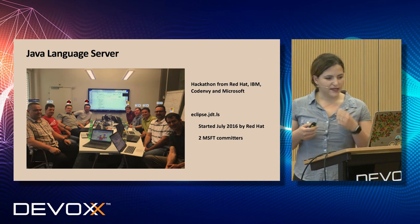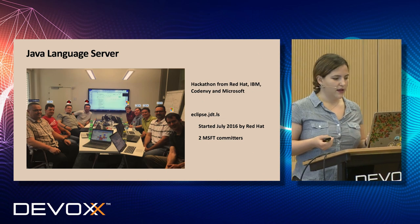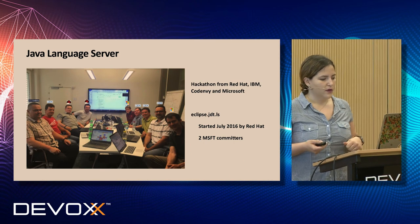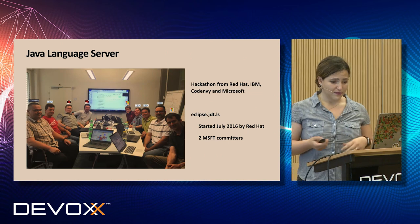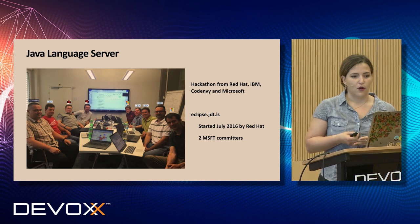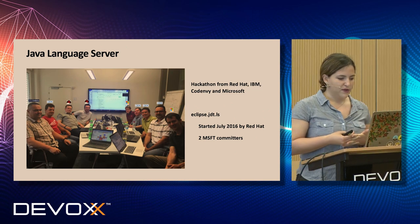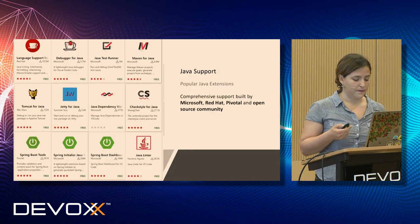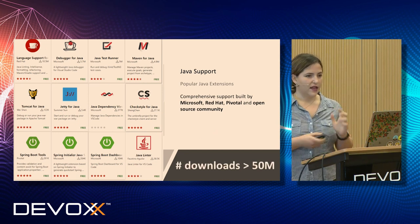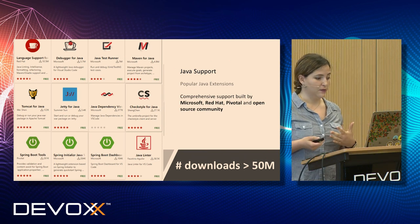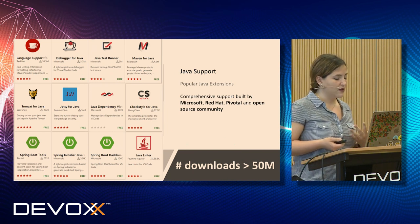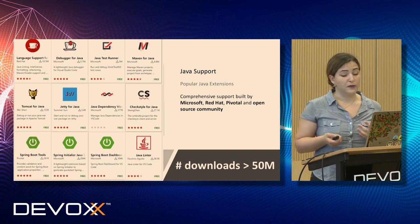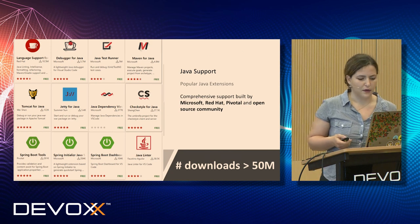In 2016, a group of people gathered and said: we have this great Language Server Protocol — why don't we have a Java language server to implement that protocol? So a group from Red Hat, IBM, Codenv, and Microsoft collaborated and created that server over a hackathon in Switzerland. It was very successful, and it's now continued to be supported by Red Hat. At the moment, we see more than 50 million downloads of the Java plugin for VS Code — that's a fivefold growth from three years ago, which is pretty amazing.